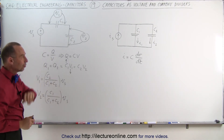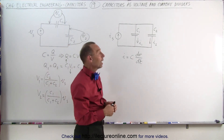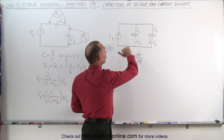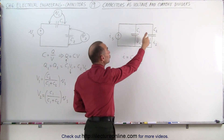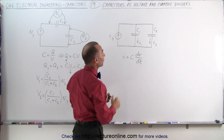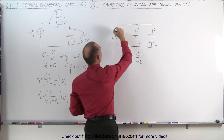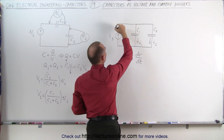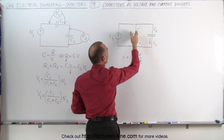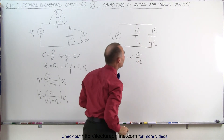Now let's look at the other circuit where we're trying to determine how much current will flow to each of the two branches. Notice that here we have parallel branches, with the total source current I_S being divided between them.